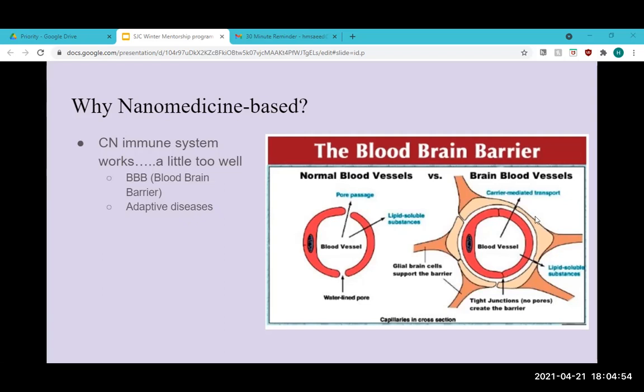In this diagram here, the main way that drugs and particles transport themselves throughout the body is through our blood vessels. If you look at a normal blood vessel compared to the brain blood vessels, you can see that the brain one has this barrier around it composed of glial brain cells. Glial brain cells are composed of microglia and macrophages, which are basically immune defense cells for the brain. With this barrier, it makes it incredibly difficult for things to get in and out of the brain. So even if a treatment is effective, if it can't even get to the site of the disease, it's basically useless.